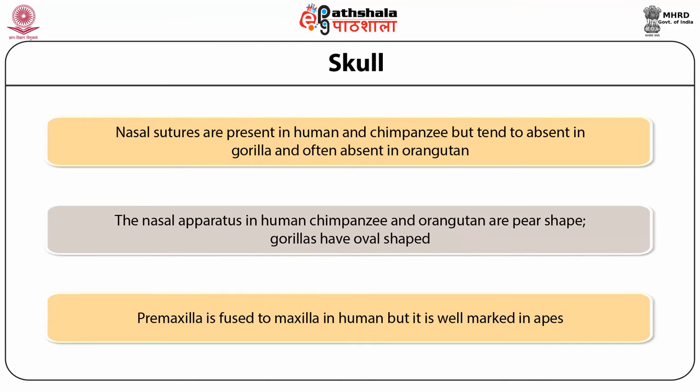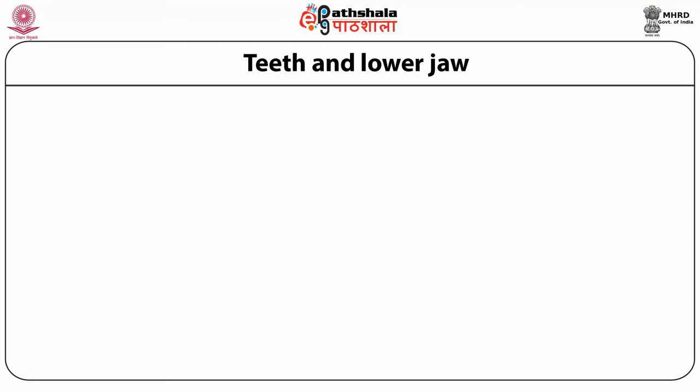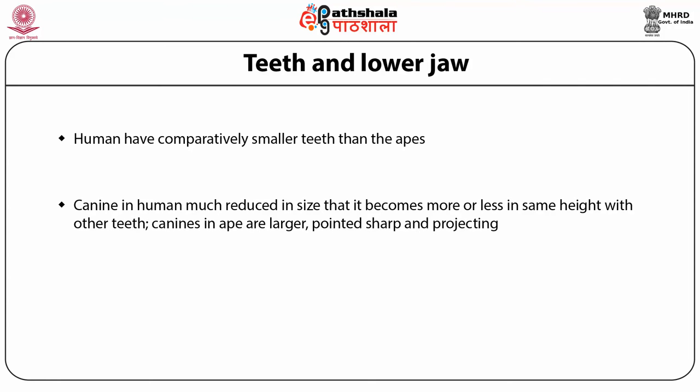These are the important characteristic features of the skull which make the distinction between apes and humans. Now let's discuss about the teeth and lower jaw. The morphology of teeth is associated with the dietary habits of the animal. Since humans have adapted to cooked and tender food, the size of the teeth is also reduced. Humans have completely smaller teeth than apes. The canine in humans is no longer used for tearing flesh, so it is much reduced in size, becoming more or less the same height as other teeth.